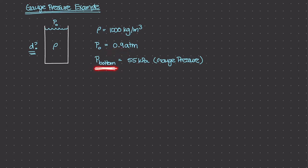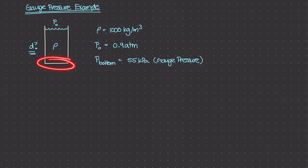The pressure at the very bottom of this container is 55 kilopascals. Quick note: this is gauge pressure — it is the pressure read on the pressure gauge at the very bottom of this container. This is not absolute pressure.